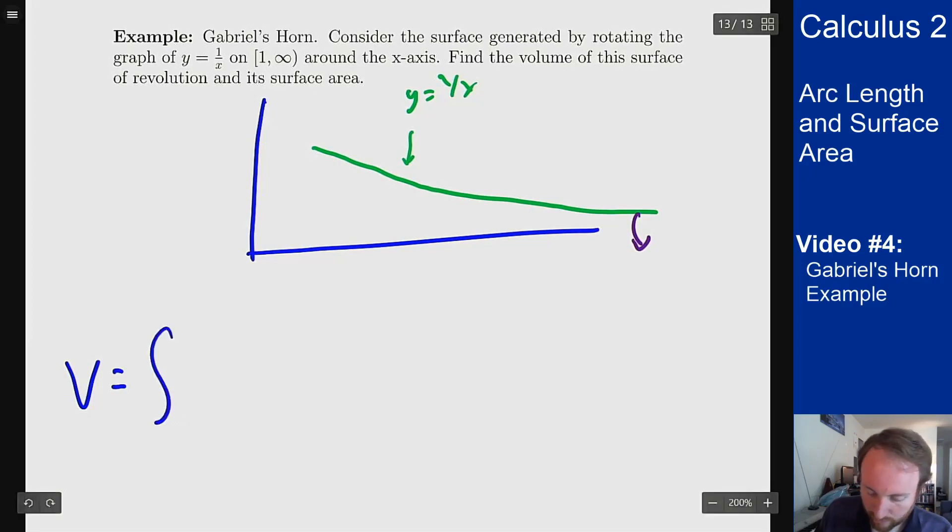It should be the integral from one to infinity of pi times the radius squared. Now the radius here is this length, so it's the function value. This is standard disk method. This is pi times one over x squared dx, which is pi times the integral from one to infinity of one over x squared.